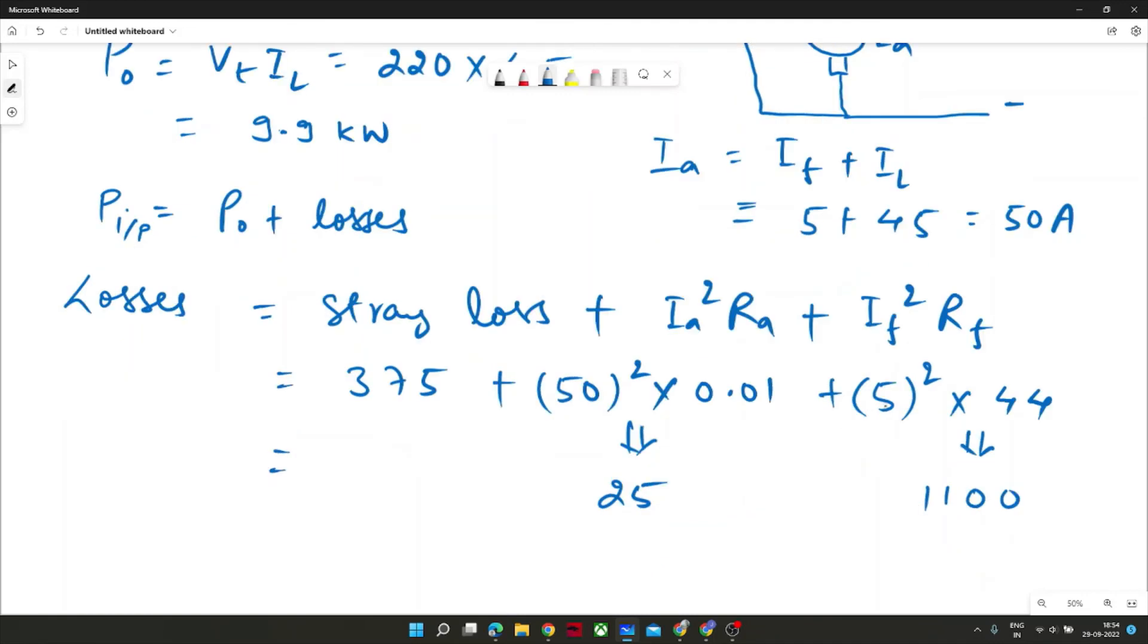So you can see significant loss, copper loss is happening in field component. And in armature resistance, since it was very small, so negligible amount. So total losses, if I add, it can be 1500, 1500 watt in total losses.